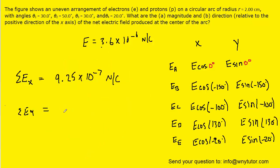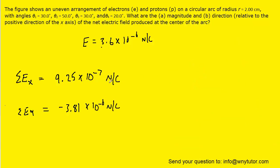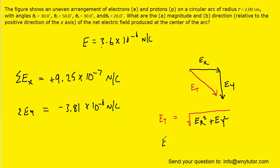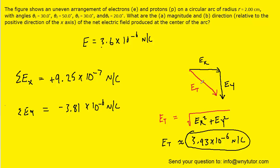Doing a similar calculation for the y components, you should get roughly negative 3.81 times 10 to the minus 6 newtons per coulomb. The x component was positive, meaning it projects rightward; the y component was negative, so it projects downward. To get the overall electric field, we use the Pythagorean theorem to find the total resultant, which gives approximately 3.93 times 10 to the minus 6 newtons per coulomb. This is the correct answer to part A — the magnitude of the electric field.